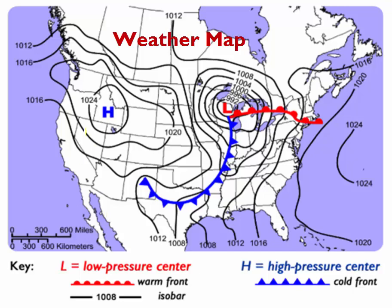Hi class, just a quick video explaining weather maps and the highs and lows, what these lines mean with the numbers on them, and what these highs and lows and these numbers mean for airflow and for weather in the different areas on the map.